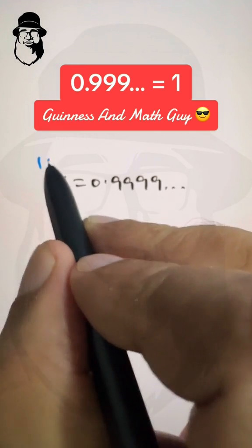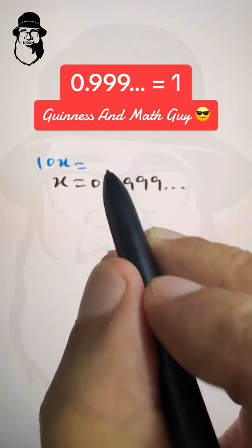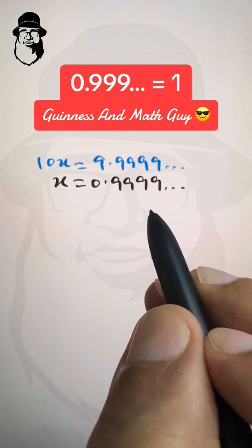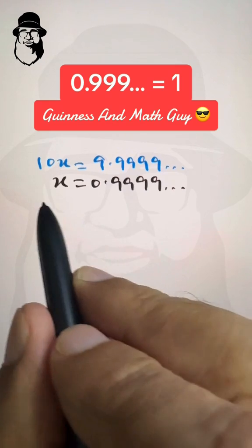We have 10x is equal to 9.9999 repeating, right? Now if we subtract this equation from this equation...